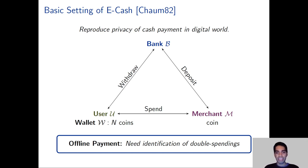Another key property of traditional cash payments is that they can be done offline. In particular, the merchant doesn't have to connect to the bank every time it wishes to accept a traditional cash payment. Instead, under the assumption that it's hard to convincingly clone physical cash, the merchant can inspect the bank note and then decide whether to accept or reject the payment. However, this unclonability assumption does not hold in the digital world, as there is nothing that stops a user from making many copies of its wallet and then spending the same coins at different merchants. Therefore, eCash systems introduce an identification mechanism where, if a user double spends a coin, the bank can de-anonymise them and punish them suitably.